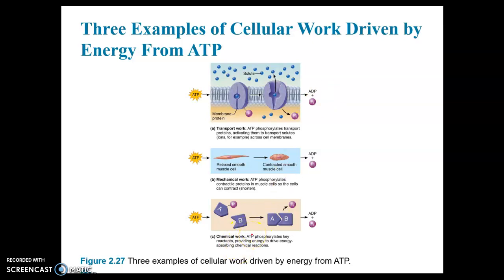Mechanical work is done with ATP. The contractile proteins in muscle cells called actin and myosin require ATP for the contraction of muscle cells. This is a smooth muscle that's shown here. When it contracts, it becomes shorter.